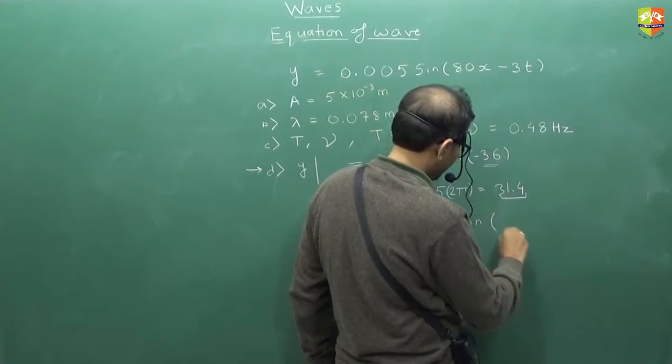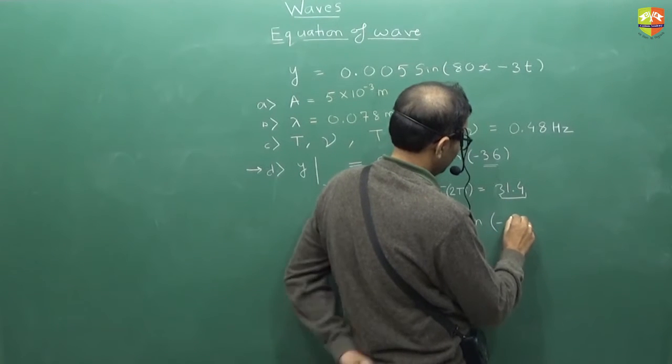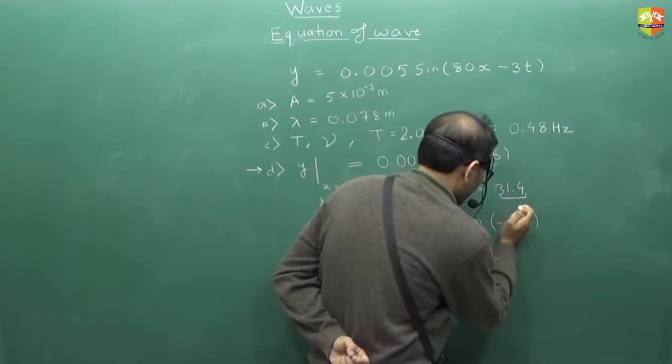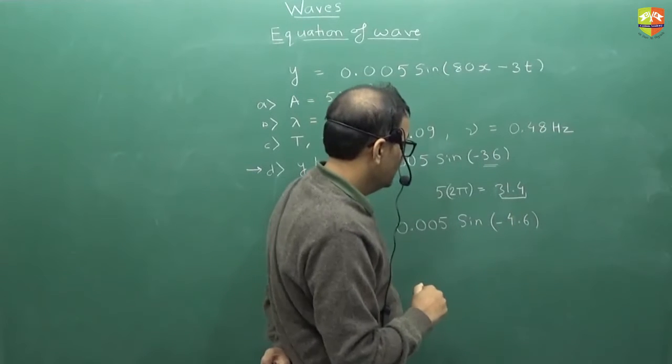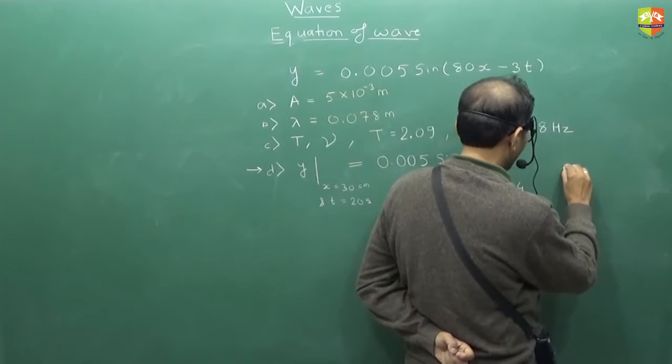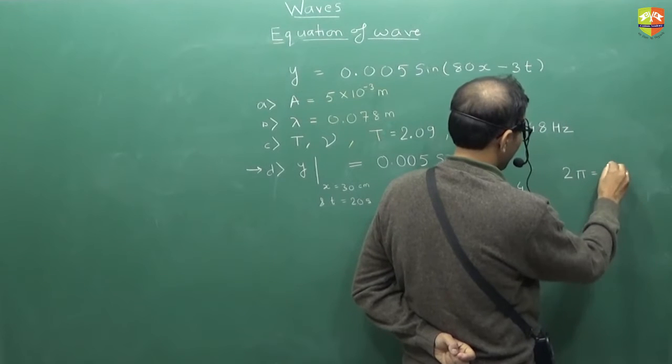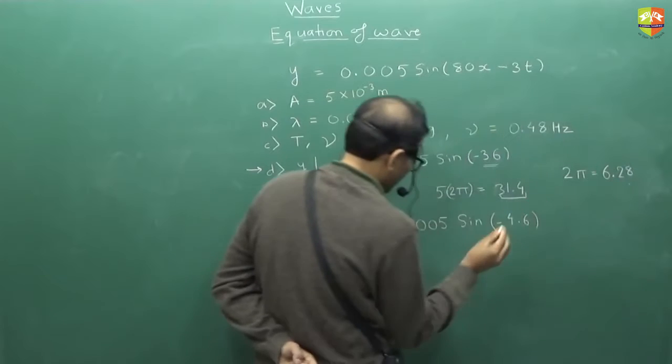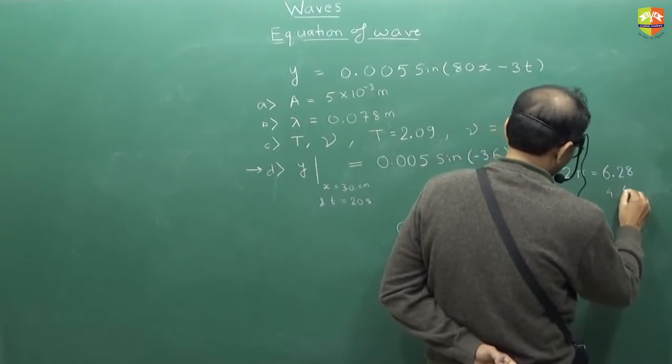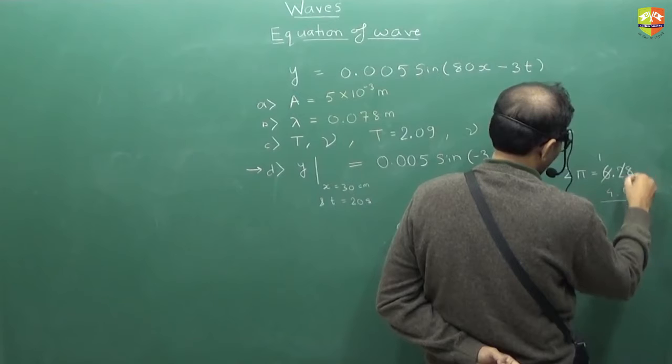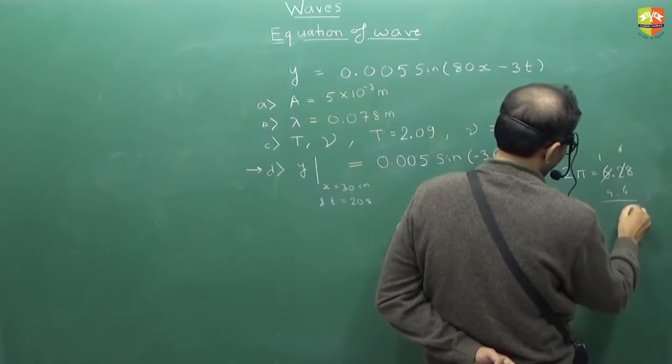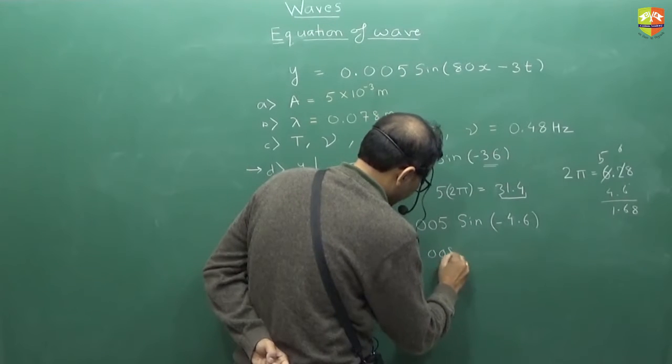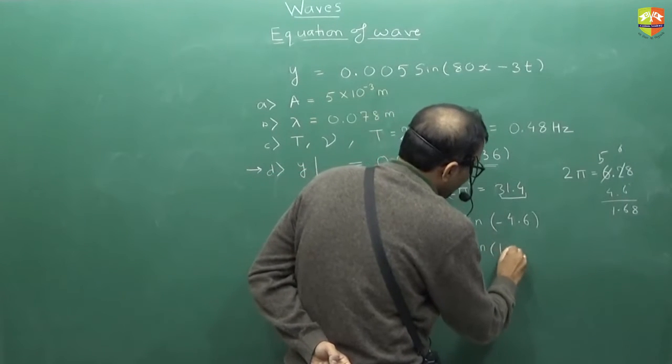So what will come inside? Minus 4.6. Now I can add 2 pi. 2 pi is how much roughly? 6.28. So add 6.28. How much will it come? 1.68.